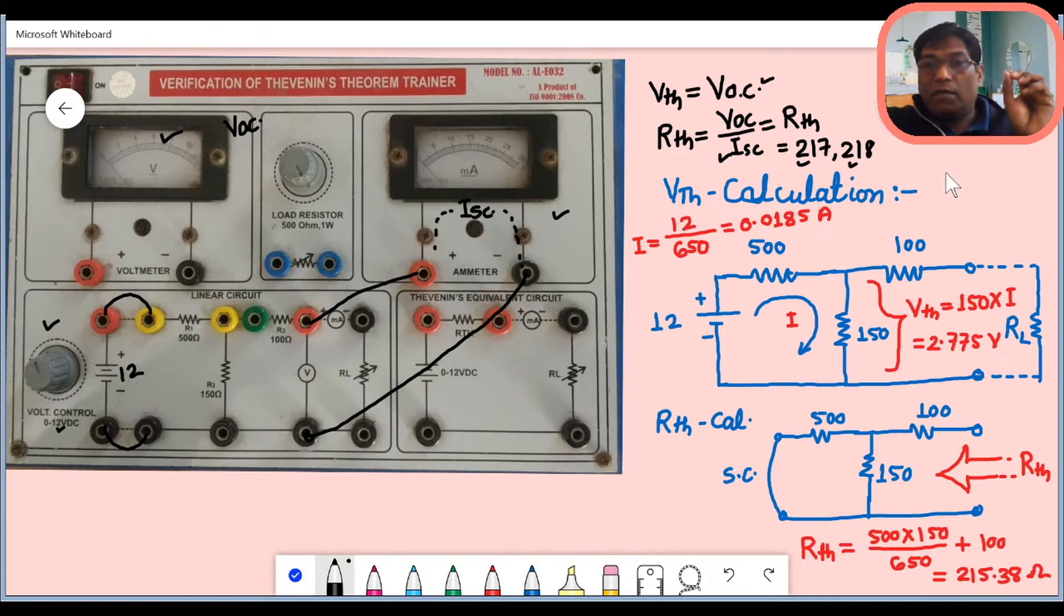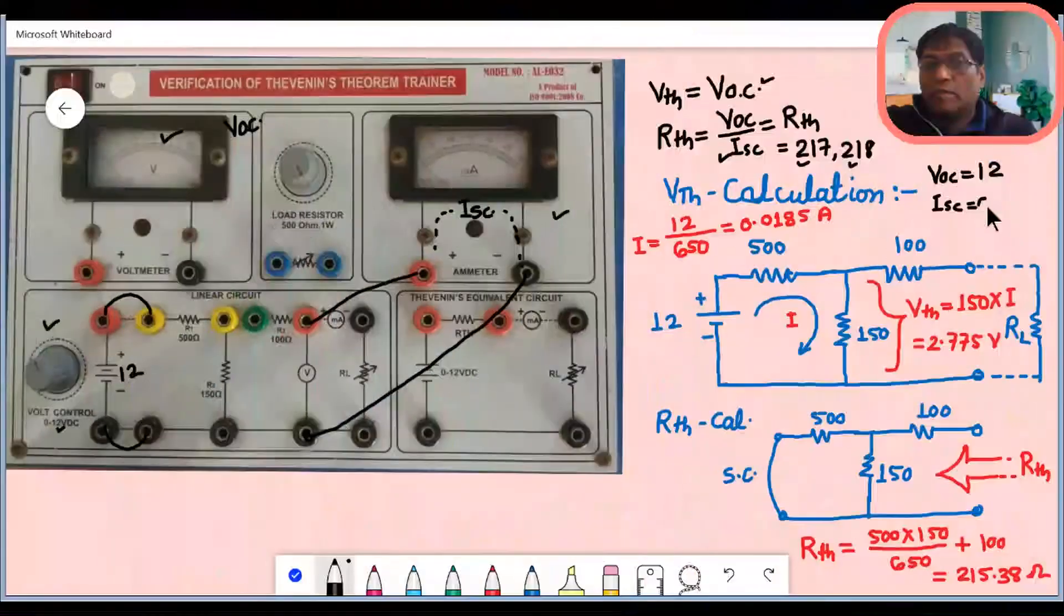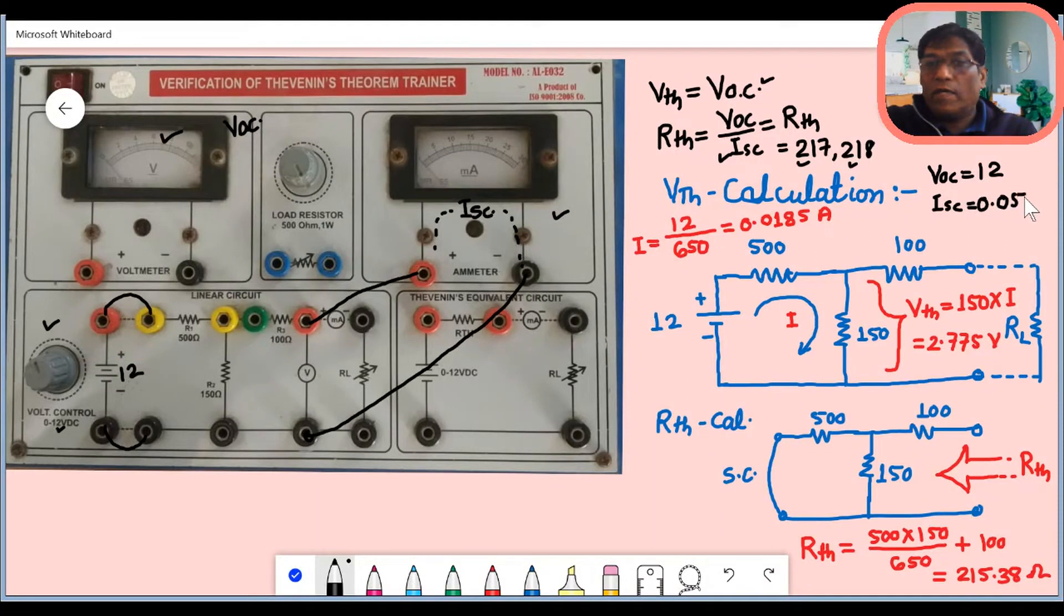If we do the measurement in real lab, VOC will come as 12. And the ISC reading is approximately coming out to be equal to 0.055 ampere. And from there the reading of resistance can be calculated as around 218.